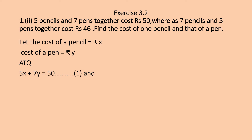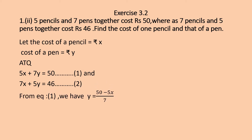Second condition: 7 pencils and 5 pens cost ₹46, that is, 7x + 5y = 46. Number this as Equation 2. Now you have to draw the graph of these equations. For that, find at least 3 solutions for each equation. From Equation 1, we get y = (50 − 5x) / 7.